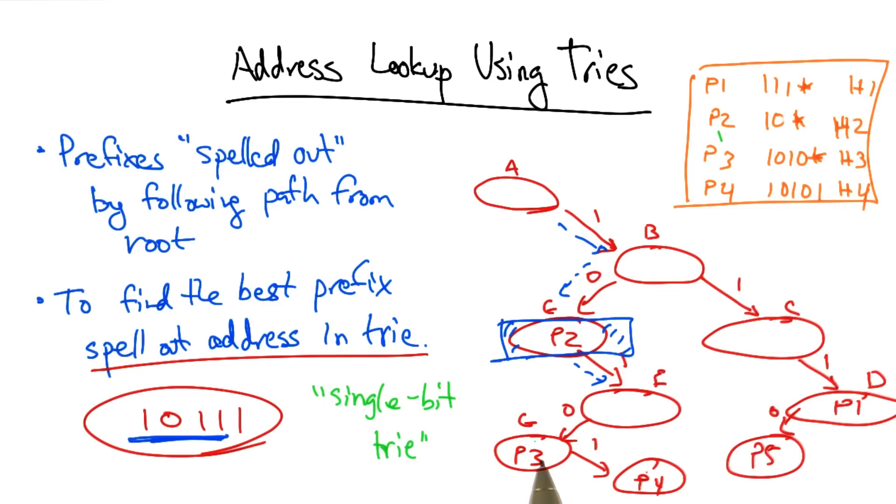So a single-bit trie is a very efficient use of memory. Updates are also very simple. We saw how easy it was to insert the entry for P5. Unfortunately,